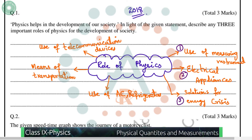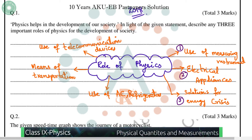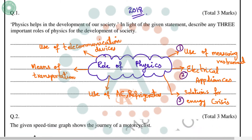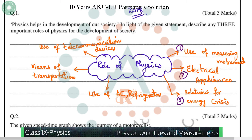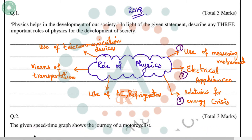Regarding the energy crisis, we are surrounded by devices that work on electrical energy, so we need to think about alternate plans for producing electricity. Physics helps us invent new methods, such as converting tidal energy, wind energy, and solar energy into electrical energy, defining new alternate sources beyond burning coal or fossil fuels.